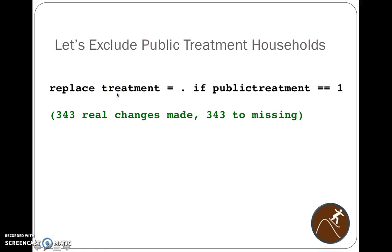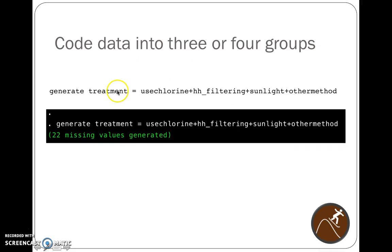So we've already generated the variable, so now all we can do is replace. We say replace the treatment variable with a dot. So replace treatment equals dot or missing if they had publicly treated water, and it requires a double equal sign. So if they have publicly treated water, then we wanted it to be missing. So it changed 343 observations. These 343 people with public treatment have now been excluded from this new treatment variable that we created about household treatment methods.